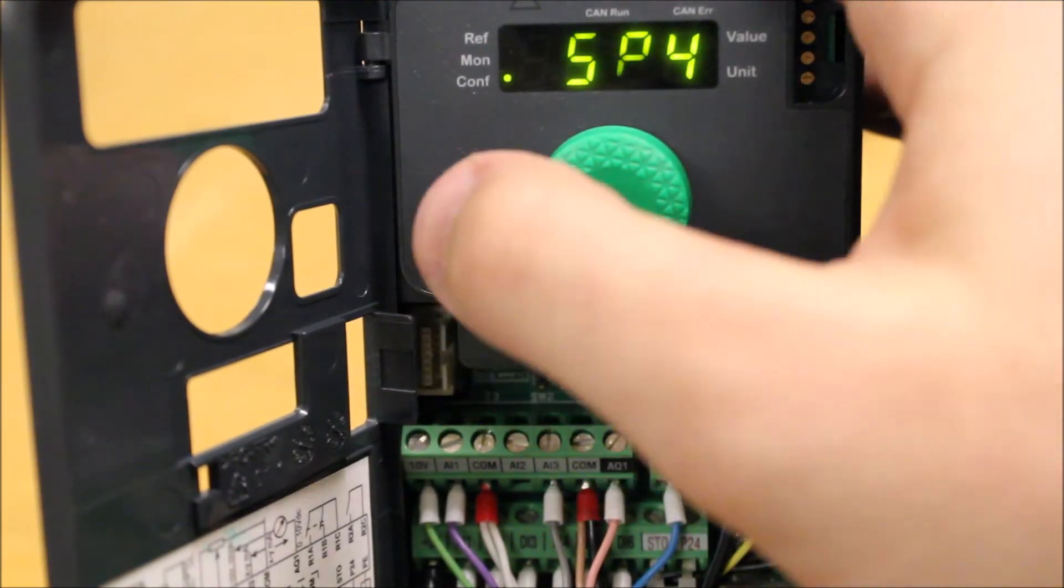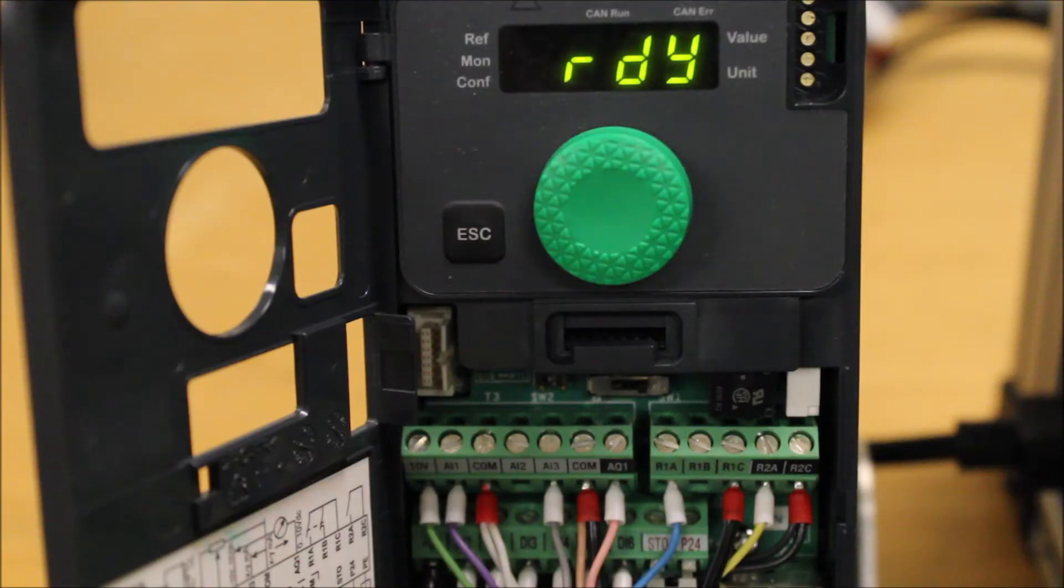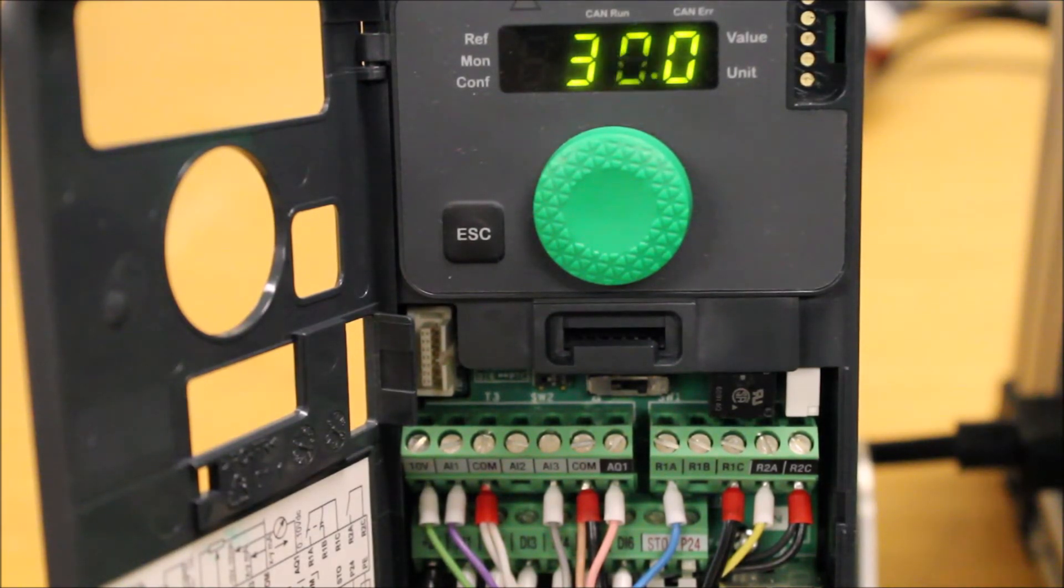Once it's all programmed, you can escape back out to your main screen, give it a run command from DI1. And with the first preset, which is DI3, it'll go to 30. With the second preset, it'll go to 60. And with DI3 and DI4 turned on, it'll go to 45.